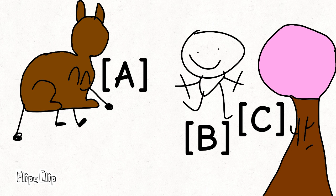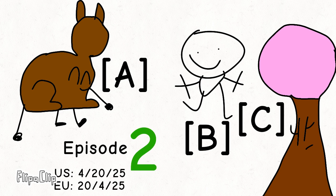Viewers, vote in the comments as to which person you think should be eliminated. Episode 2 will come out April 20th, 2025.